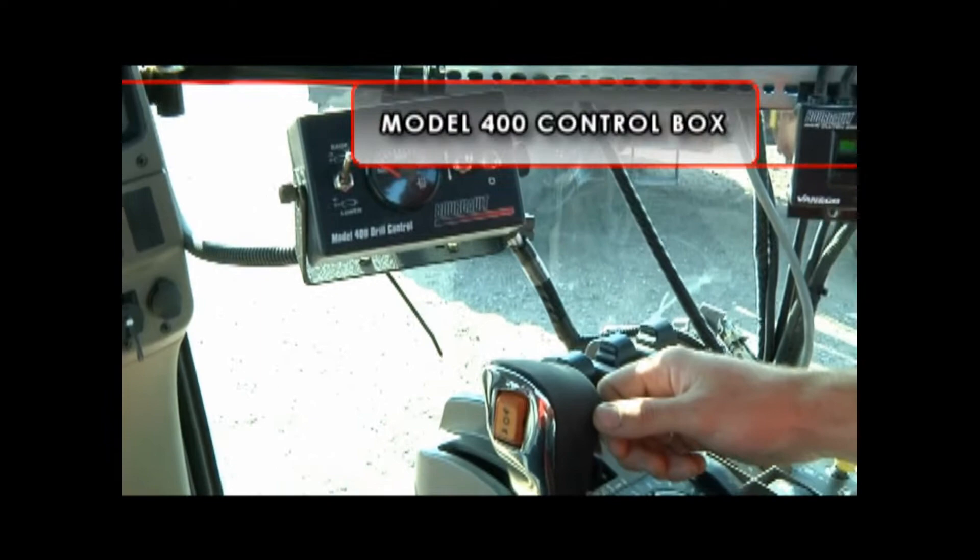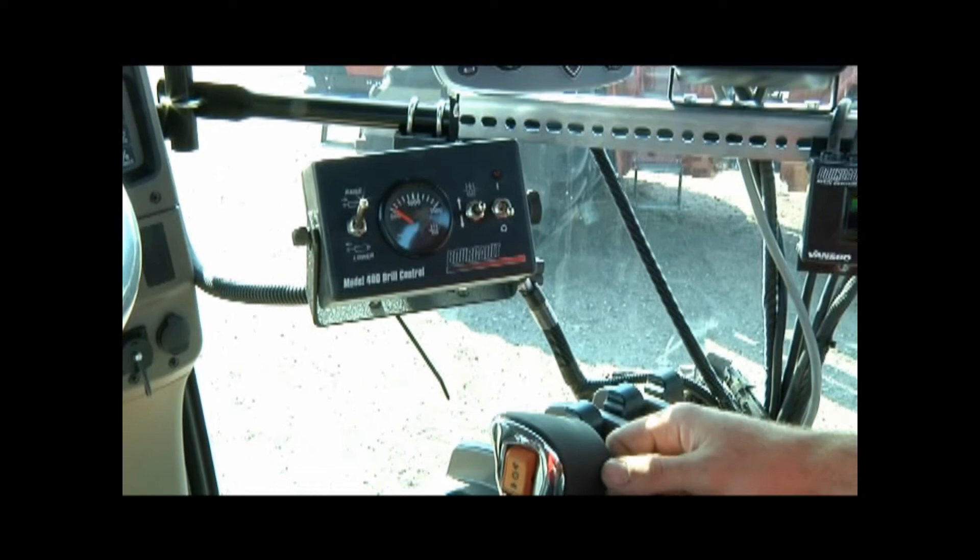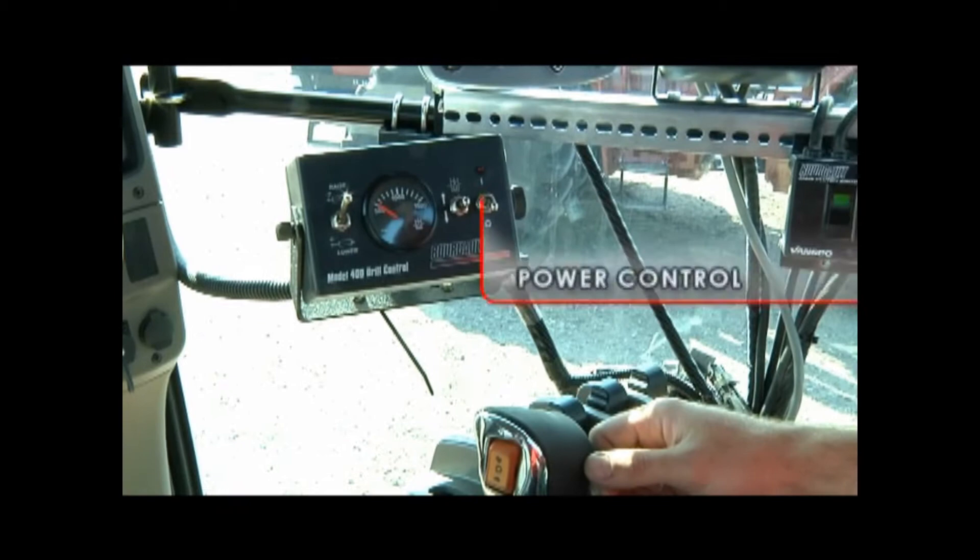The Model 400 drill control box should be installed in the tractor cab in a location relatively close to your other hydraulic functions and air seeder monitor. The control box allows you to raise and lower the openers and mid-row banders, as well as adjust the opener down pressure and packing force.